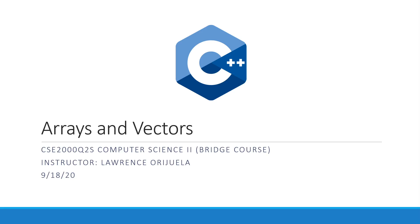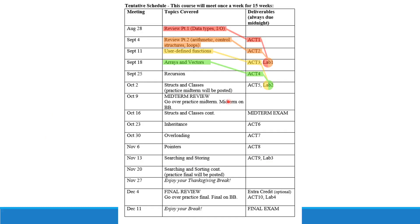Hey guys, this is lecture video 4 of CSE 2000 Q2S Computer Science 2, taught by Lawrence Orihuela. Today we're going to be talking about arrays and vectors. We are going down the line here — today is September 18th — and we'll be talking about arrays and vectors, which are two very useful things to use in C++, especially when you're handling large groups of data.